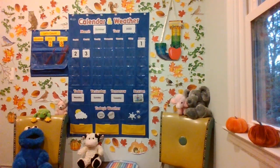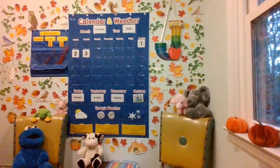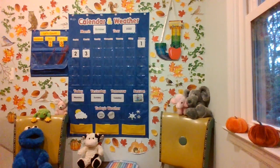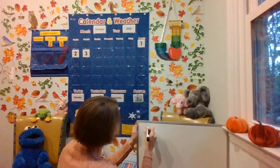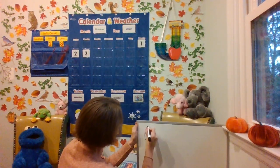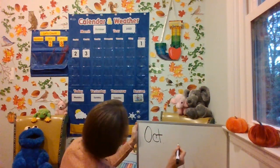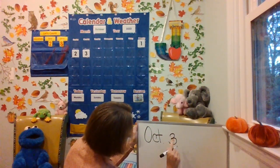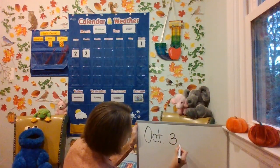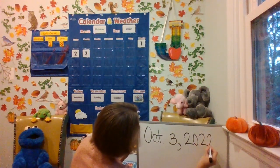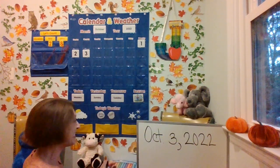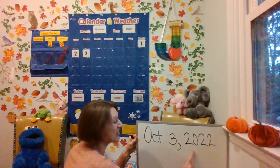Let's go ahead and write the date. You need something to write on and something to write with. Starting with our uppercase letter O — we always capitalize the start of each month of the year. That first letter is very special. Make sure you have a capital O, C, T, period, finger space. Write the number three — start at the top, curve back, do two loops around, comma, finger space, 2022. Write that down and then practice reading it: October 3rd, 2022.